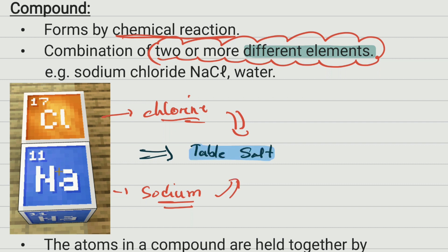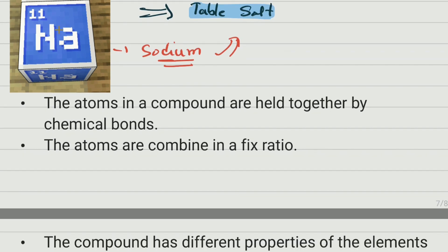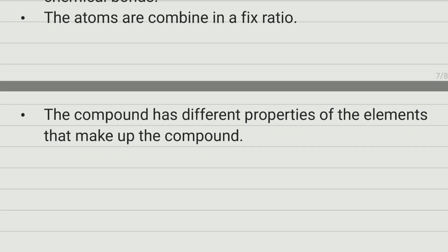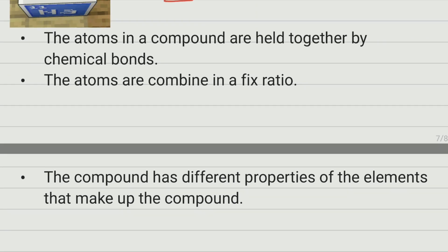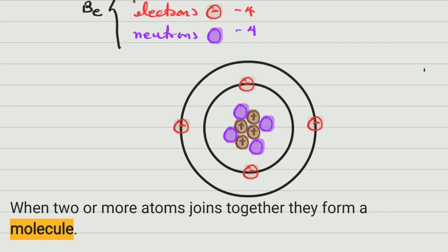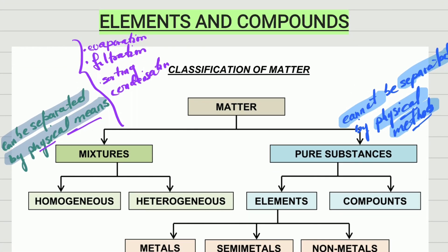There are other important things to know about compounds. The atoms in a compound are held together by chemical bonding — we'll learn about that later. For now, you just have to know that chemical bonds keep them together. Also, the atoms are combined in a fixed ratio, and compounds have different properties from the elements that make them up. We're going to stop here for now.